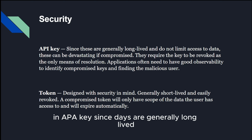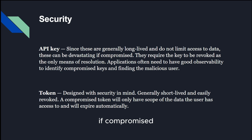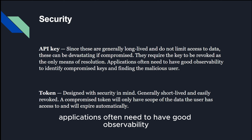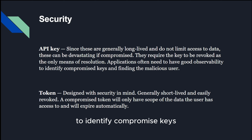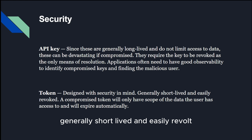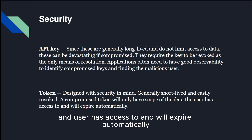For API keys, since these are generally long-lived and do not limit access to data, a compromise can be devastating. They require the key to be revoked as the only means of resolution, and applications often need good observability to identify compromised keys and find the malicious user. Whereas tokens are designed with security in mind — generally short-lived and easily revoked — a compromised token will only have the scope of data the user has access to and will expire automatically.